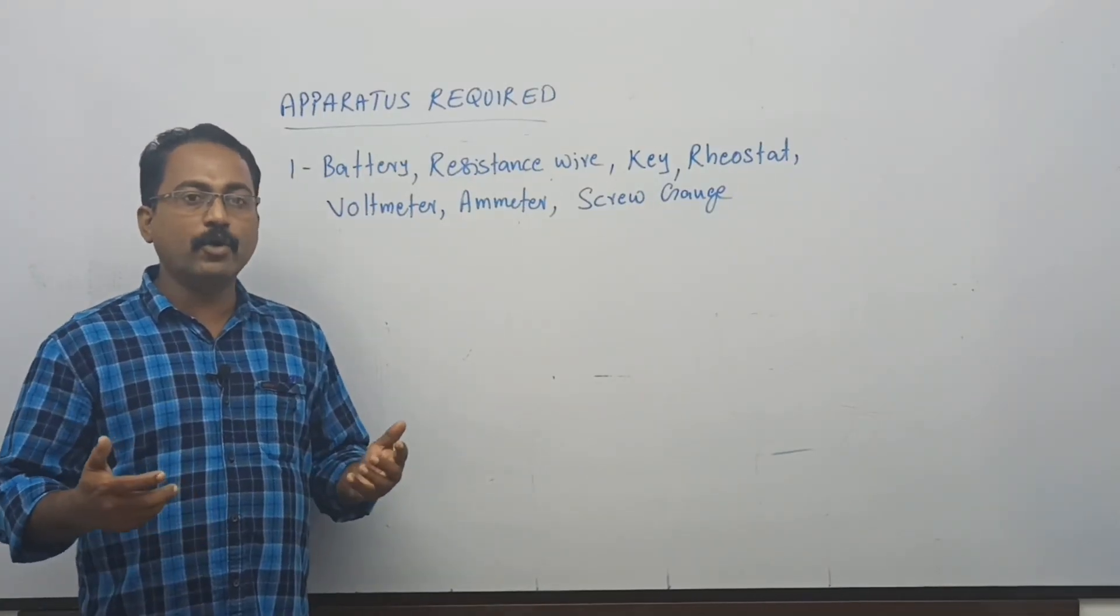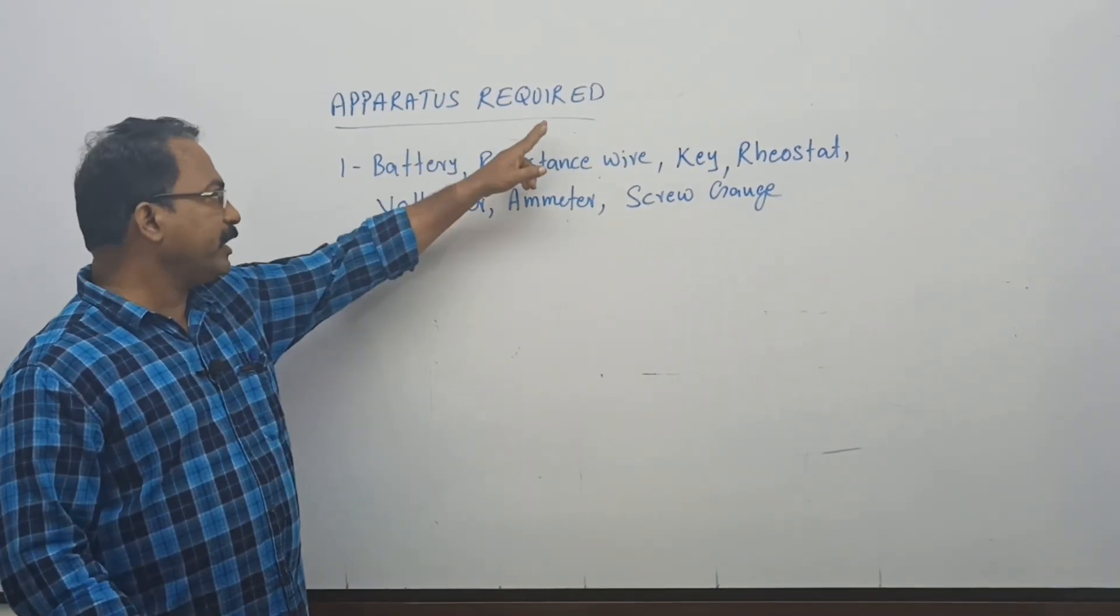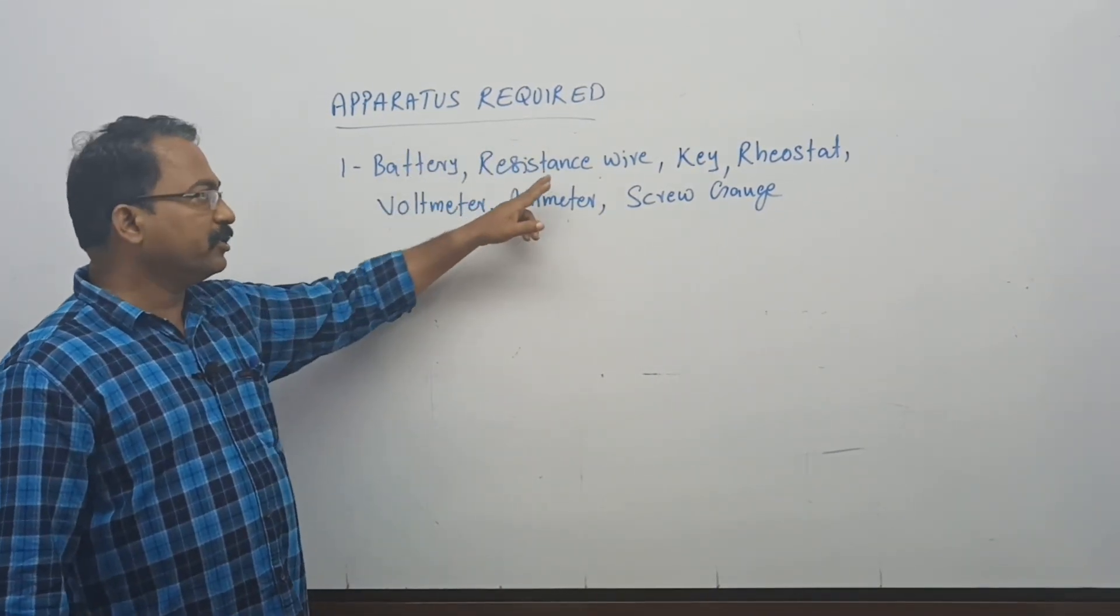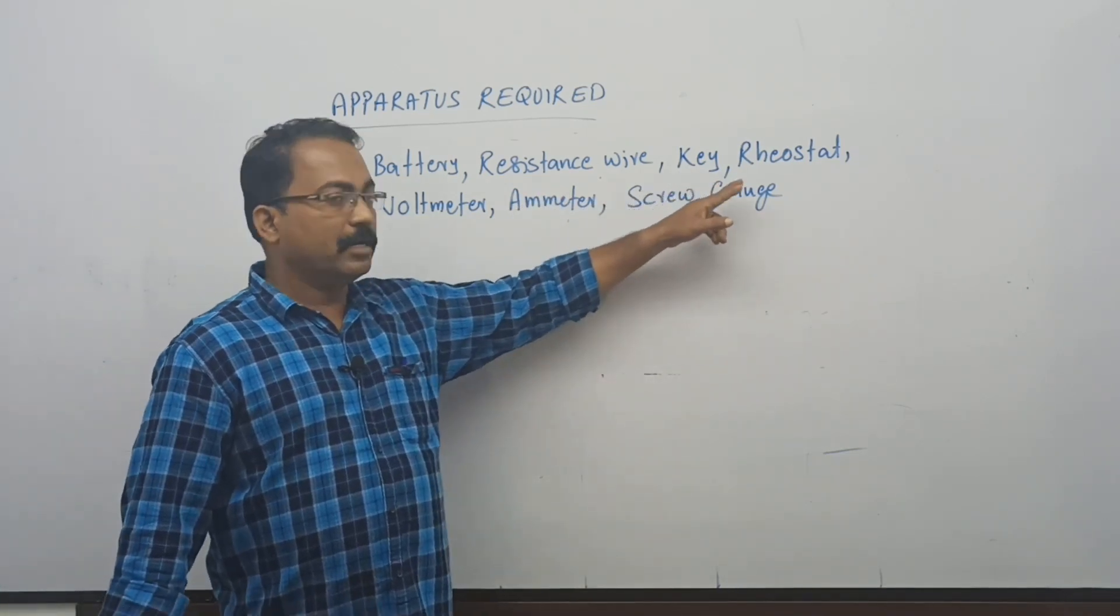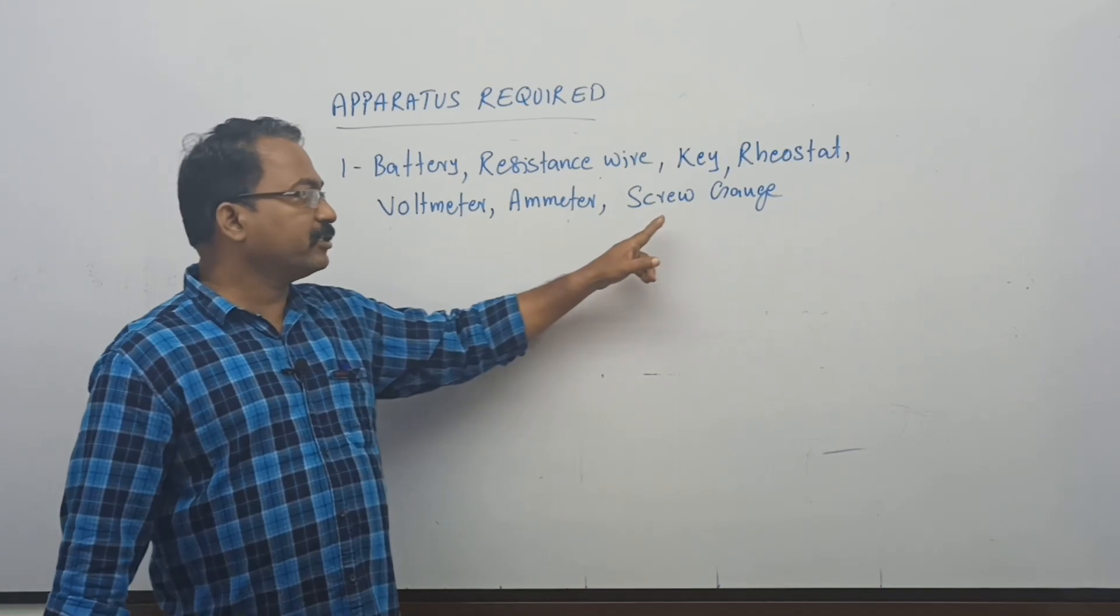Now we will see what apparatus are required for this experiment. Apparatus required: battery, resistance wire, key, rheostat, voltmeter, ammeter, and a screw gauge.